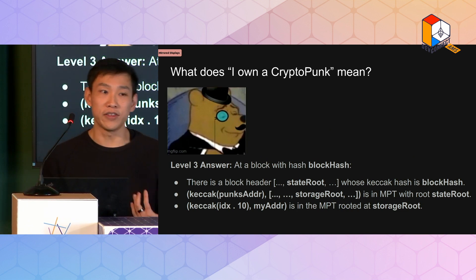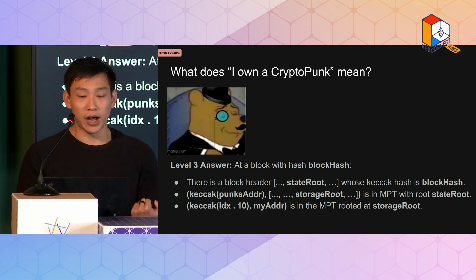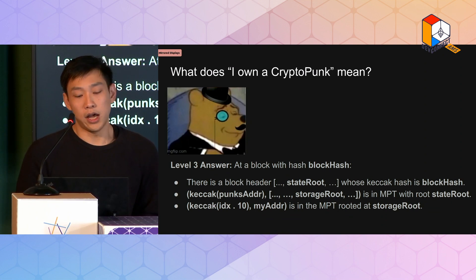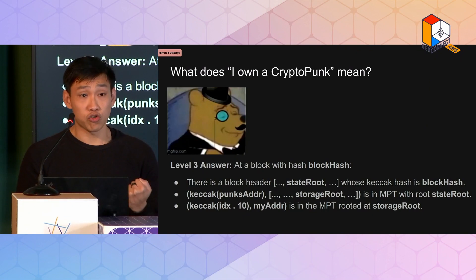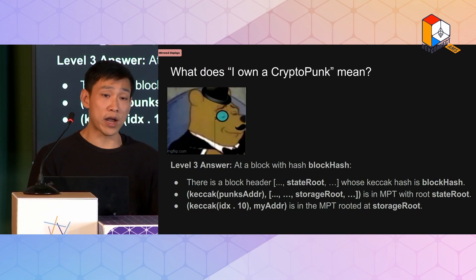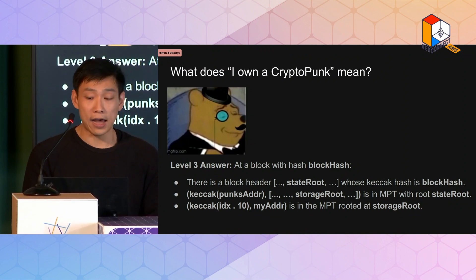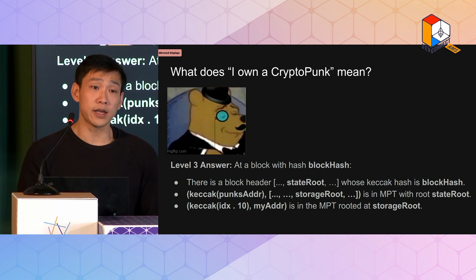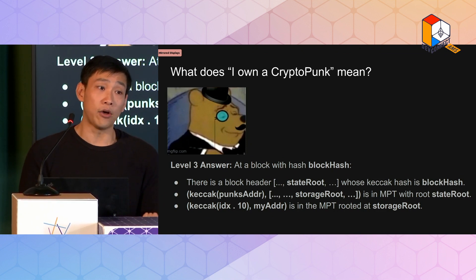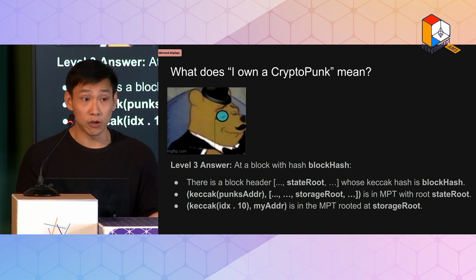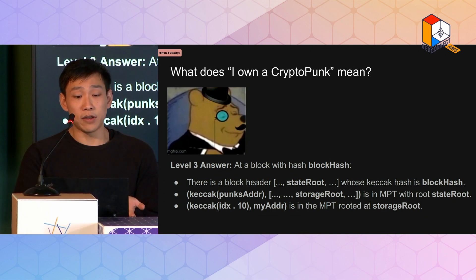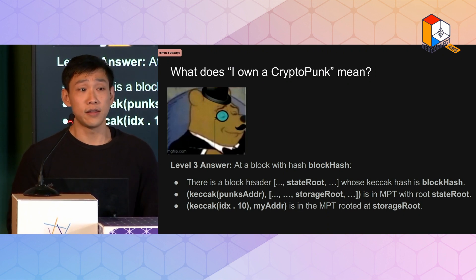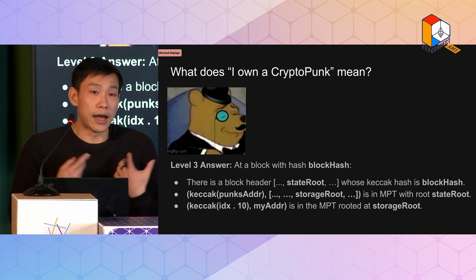So from this perspective, what does owning a CryptoPunk mean? It means that there is a block with a known block hash whose block header contains a specific state root. And within that state root, I can do a Merkle-Patricia trie proof of inclusion to show that for the address of the CryptoPunks smart contract, I have some storage root. And within that storage root, I can do a Merkle-Patricia trie inclusion proof that a specific key-value mapping corresponding to the compiled Solidity code has my address as the owner of some CryptoPunk. So when we compile the statement that I own a CryptoPunk all the way down, this is exactly what ZK Attester proves when making the claim that I own some CryptoPunk.